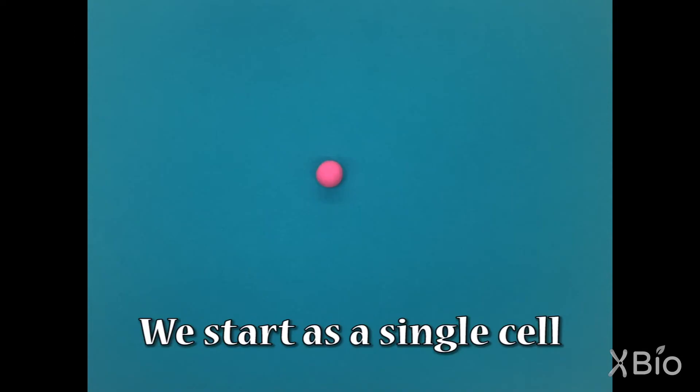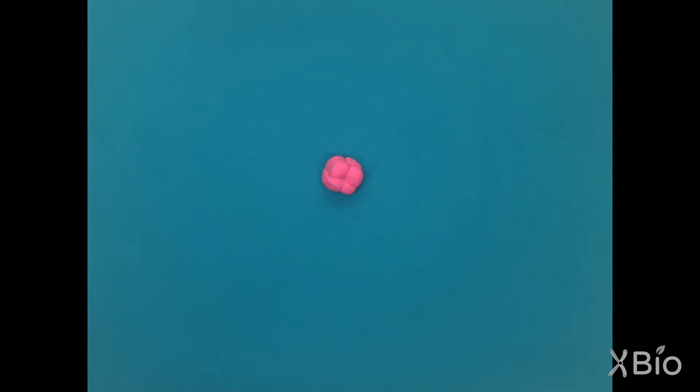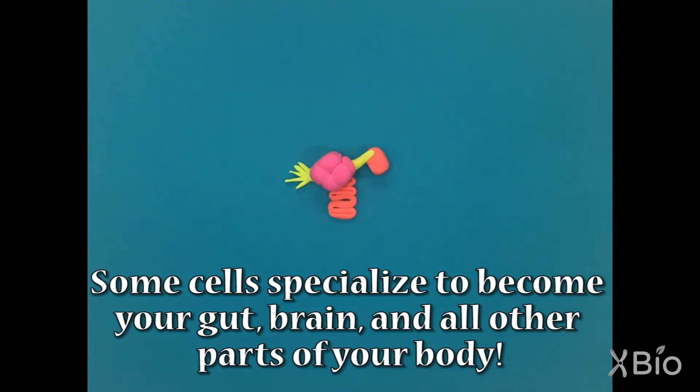We start as a single cell, which splits into two, then four, then eight, and so on, until some cells specialize to become your gut, your brain, and all other parts of your body.